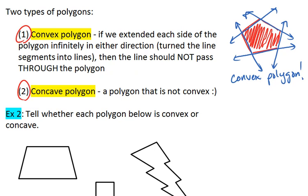If your polygon is not convex, then it's called concave. For example, let's look at this polygon.